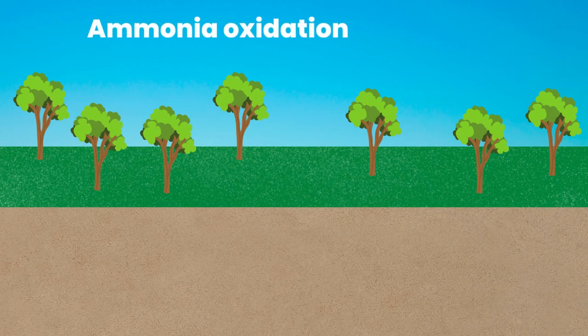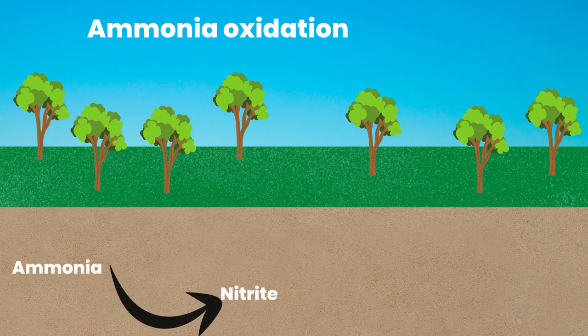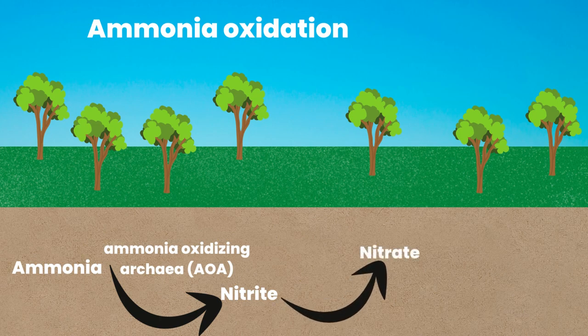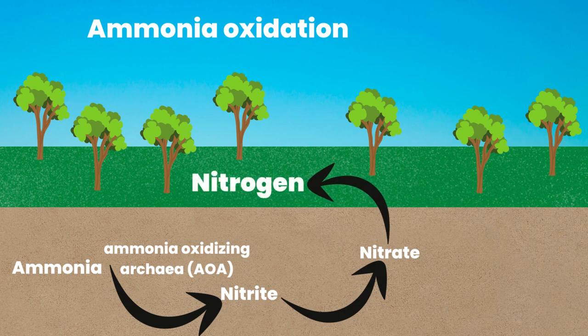Why is ammonia oxidation important? Ammonia oxidation is a core process in the nitrogen cycle. It is essential for nutrient turnover. It involves the oxidation of ammonia to nitrites with the help of ammonia oxidizing achaea. Nitrite is then converted to nitrate, which is assimilated by the plant as nitrogen.